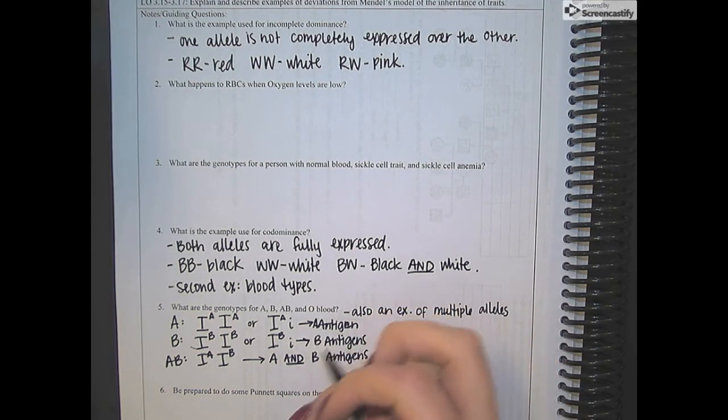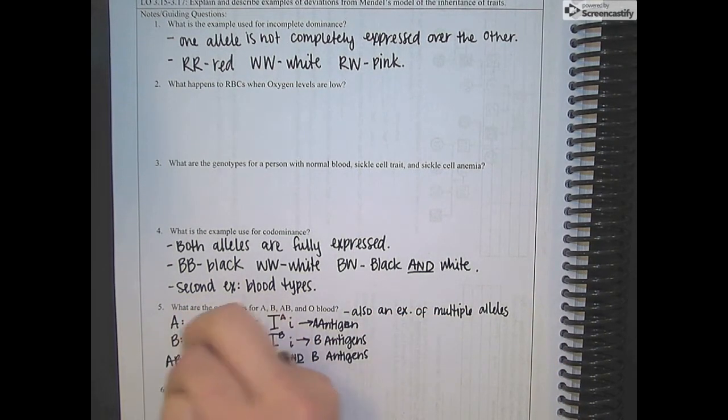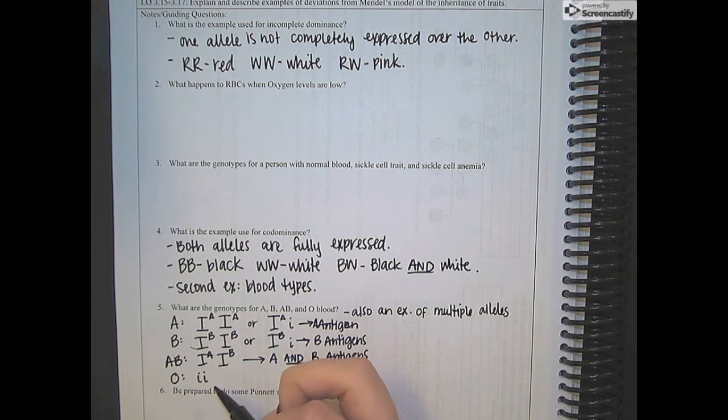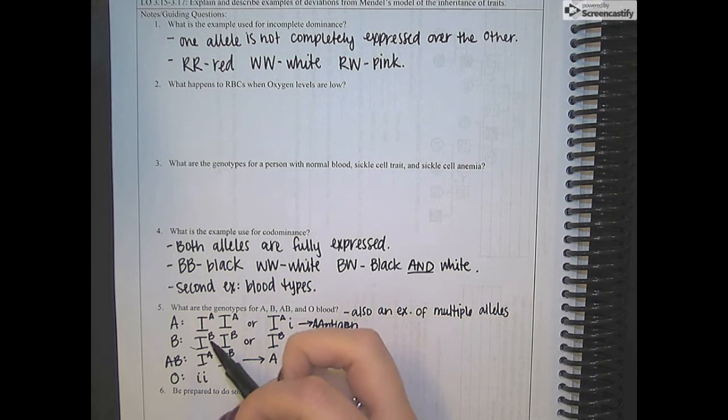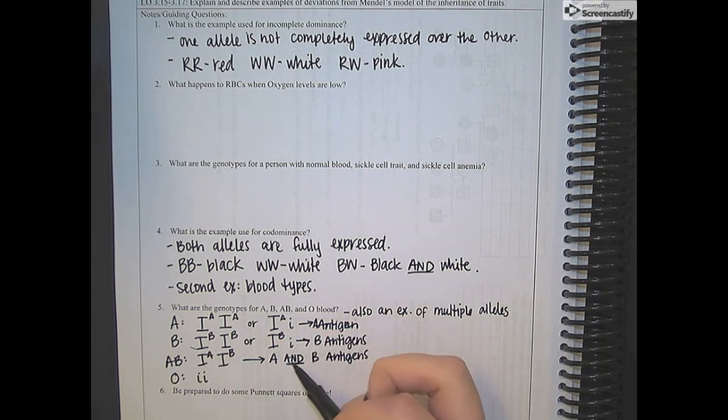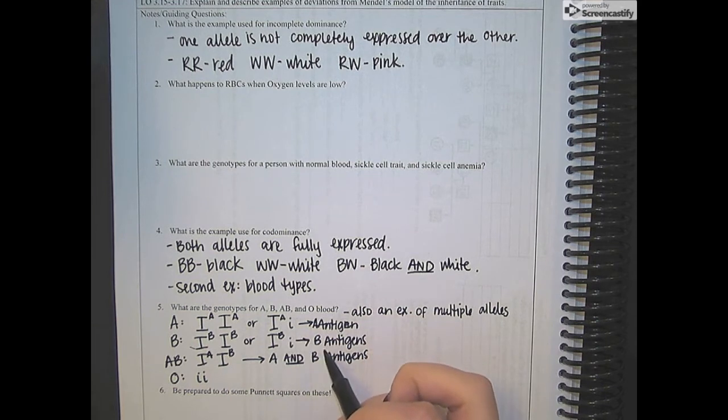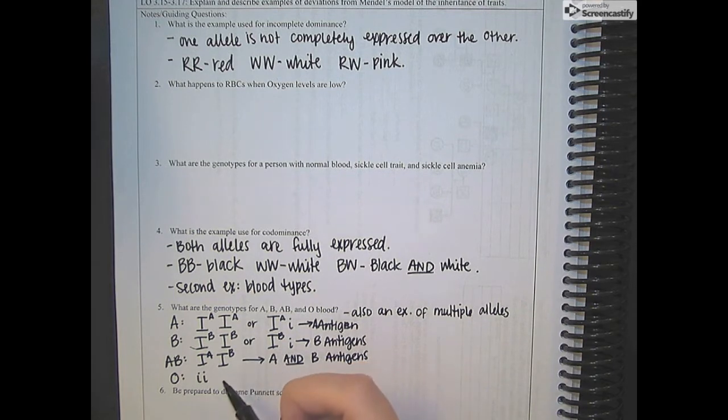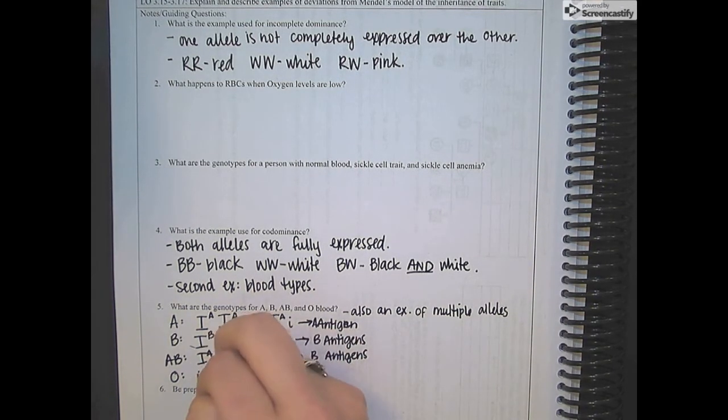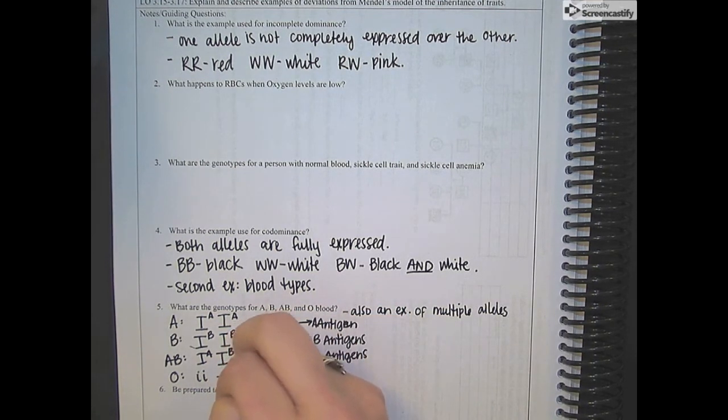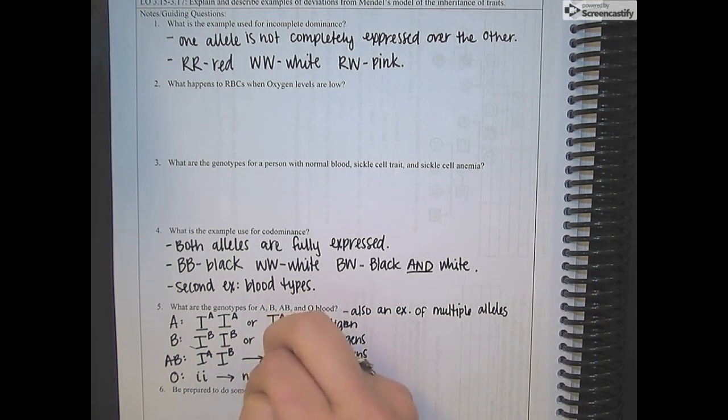The fourth blood type is O blood. And that is going to have two of the recessive I's. So it can't have an A because it would end up expressing an A antigen. And it can't have a B because it's going to end up expressing a B antigen. Those are both codominant, but they're both dominant to this recessive I, which codes for no isoagglutinogen. So that would be none of those antigens.